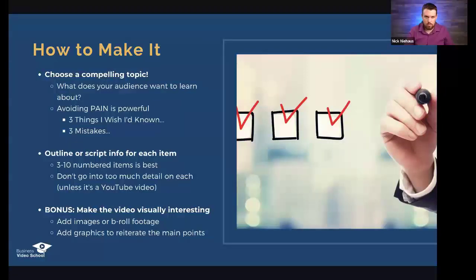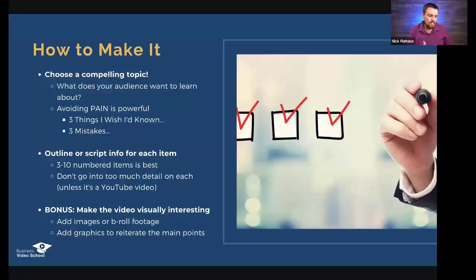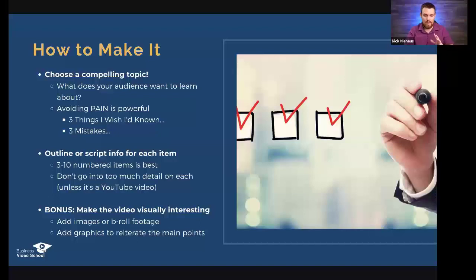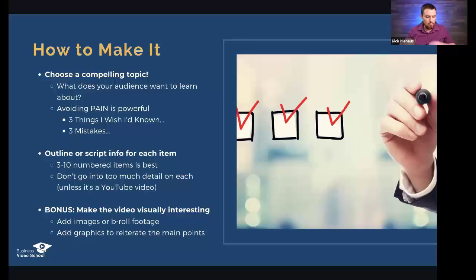If you want to take this to the next level — and this is not required — you can add B-roll, graphics, and images. The easiest form is to add a text-based graphic for each of the points you make. Going back to the restaurant example, you could add a text graphic with just the name of the restaurant, the logo, or a picture of the front.